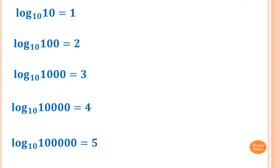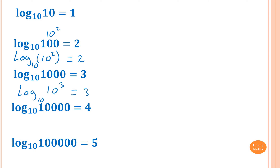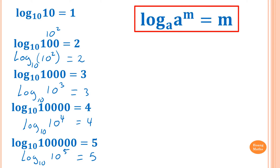We know that log 100 — and 100 is 10 squared — so this means that this is equal to log of 10 squared, and that is equal to 2. A thousand means 10 to the power 3, which gives 3. Log of ten thousand is 10 to the power 4, which is equal to 4. And log of a hundred thousand is 10 to the power 5, and the answer is 5. Therefore in general we can say that log base a of a to the power m is equal to m — the bases must be the same.